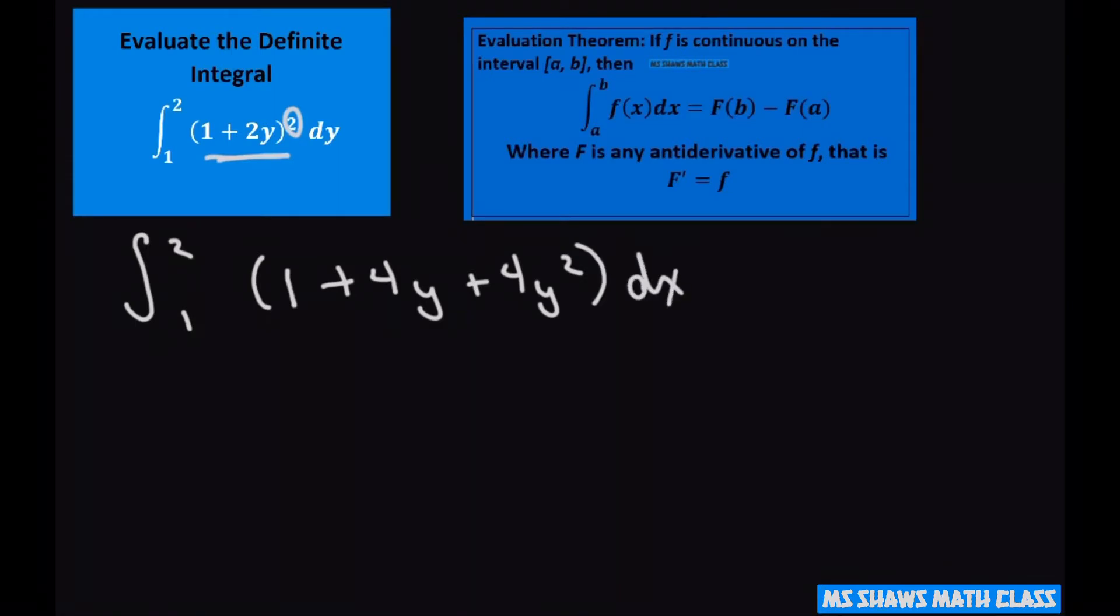Now we're going to integrate. I get the anti-derivative of this and that's going to give you y plus 4y squared divided by 2 plus 4y cubed divided by 3.